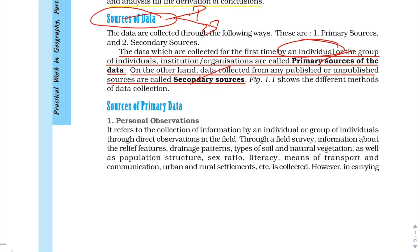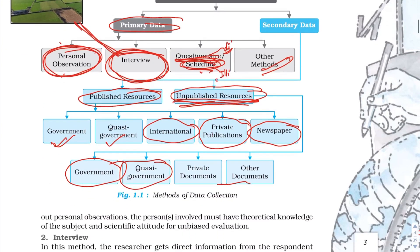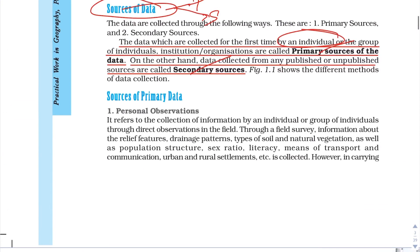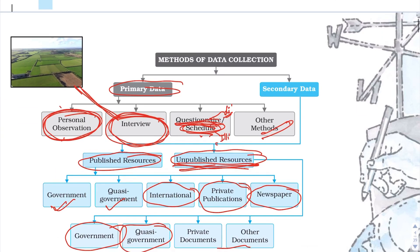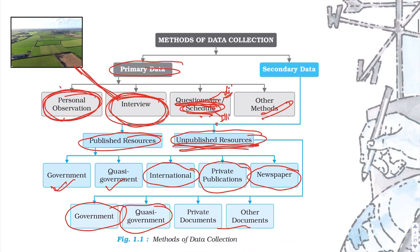Secondary sources use the same data but publish it from the primary sources. We obtain primary data from personal observations, interviews, questionnaires and schedules, and other matters.